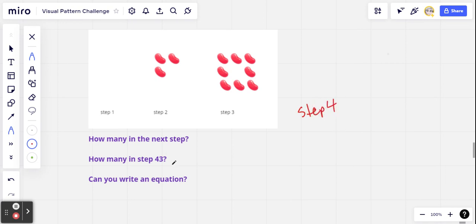If you can do that, can you predict the number in step 43? And can you write an equation that could be used to predict the number of beans in any step at all? So that's the challenge. If you'd like to accept it, pause the video and see how far you can get.